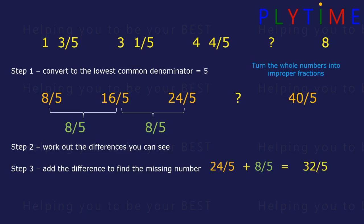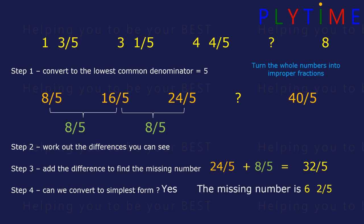Our answer equals 32 fifths. Can we simplify and convert to a simpler form? Yes — it's an improper fraction. 6 fives are 30, so it's 6 wholes and 2 fifths. The missing number is 6 and 2 fifths. We can double check: 40 fifths minus 32 fifths equals 8 fifths — so it is correct.